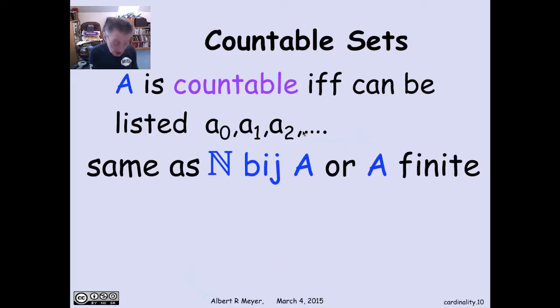That's assuming all the A's are distinct for it to be a bijection. As a special case, finite sets are also considered countable. If N is a bijection to A, then A is called countably infinite. The other possibility is that A is finite, and the two together are saying A is countable.